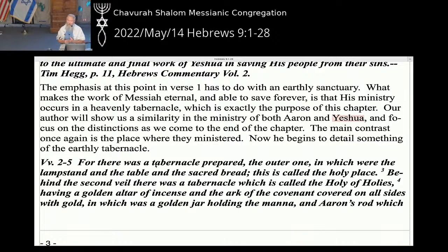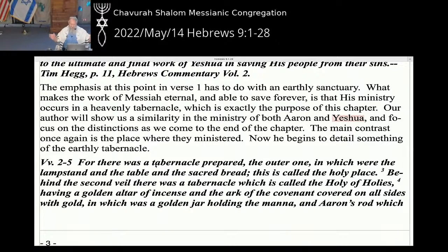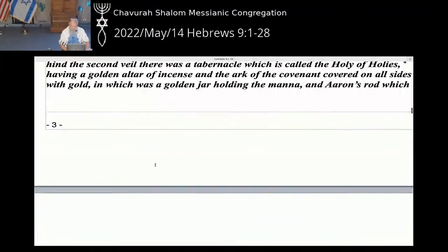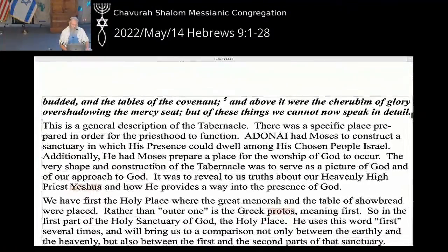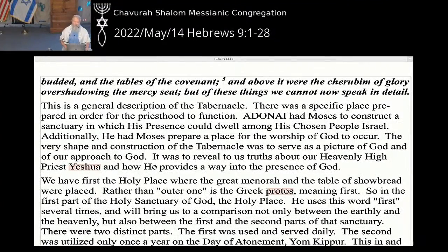Now he begins to detail something of the earthly tabernacle. He says in verses 2 through 5: there was a tabernacle prepared, the first one, in which were the lampstand, the table, and the sacred bread — that's called the holy place. Behind the second veil there was a tabernacle called the holy of holies, having a golden altar of incense, the ark of the covenant covered on all sides with gold, containing a golden jar holding the manna, Aaron's rod that budded, and the tablets of the covenant. Above it were the cherubim of glory overshadowing the mercy seat. Of all these things we cannot now speak in detail — he doesn't want to waste too much time on this, but we're going to spend a few minutes on it today.